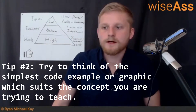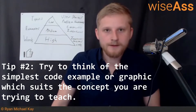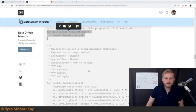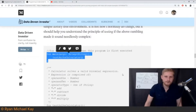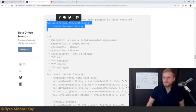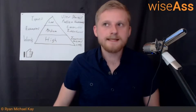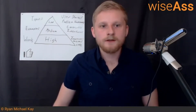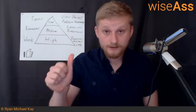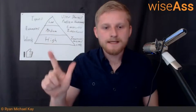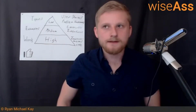Tip number two. When you're teaching beginners, I recommend two different approaches. If you can, try to have a simple code example which demonstrates in code the concept you're talking about. The thing about that is it's not always easy — it's not always possible to have a code example which can A, be easily understood by a beginner, and B, sort of accurately describe the situation.